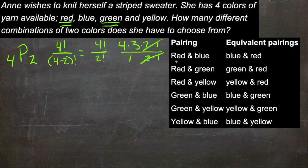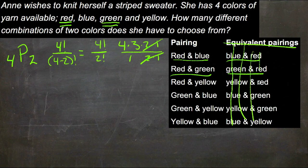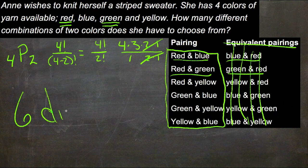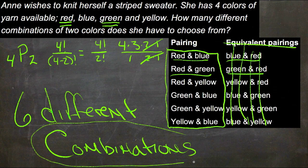The equivalent pairings are the same colors just in opposite order — so for red and blue, we have blue and red; for red and green, we have green and red, and so forth. Out of our total of 12 possibilities from the permutation calculation, half of them are duplicates. So we get rid of that half to see how many different scarves she can make. She can make a total of six different scarves — six different combinations, even though there were 12 different permutations.